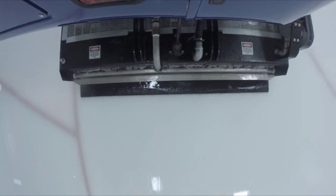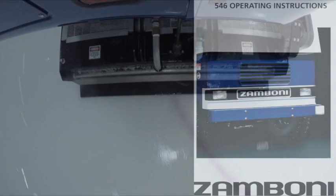Now that we have reviewed the blade, conditioner, and conveyor system, we will discuss the wash water system and the water pump. The machine's operating instructions contain information on the wash water system as well as directions for its use.